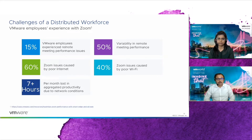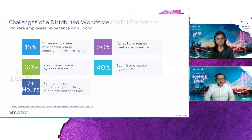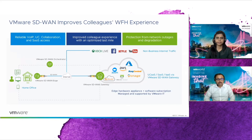Edge Network Intelligence provides out-of-box integration with Zoom using an API connector. After running the reports, we were able to identify that approximately 15% of VMware employees were experiencing remote meeting performance issues, and over 60% of these issues were created due to poor internet. We noticed that, considering these stats, more than seven hours per month per user was our productivity loss. This was a very critical issue and we wanted to address it.